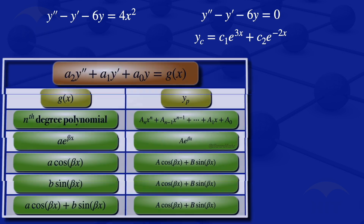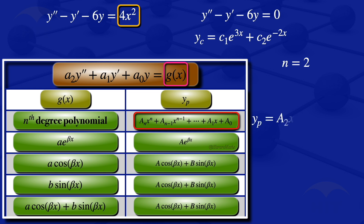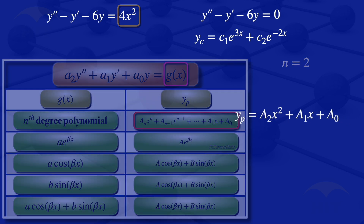We know that if we have a g(x), the particular solution form is shown in the table as yp. Our g(x) is 4x squared, which is an nth degree polynomial with degree 2, so n equals 2. When we have an nth degree polynomial, the particular solution is of the form: a_n·x^n plus a_(n-1)·x^(n-1) and so on down to a_0. With n equals 2, our particular solution is a2·x squared plus a1·x plus a0.